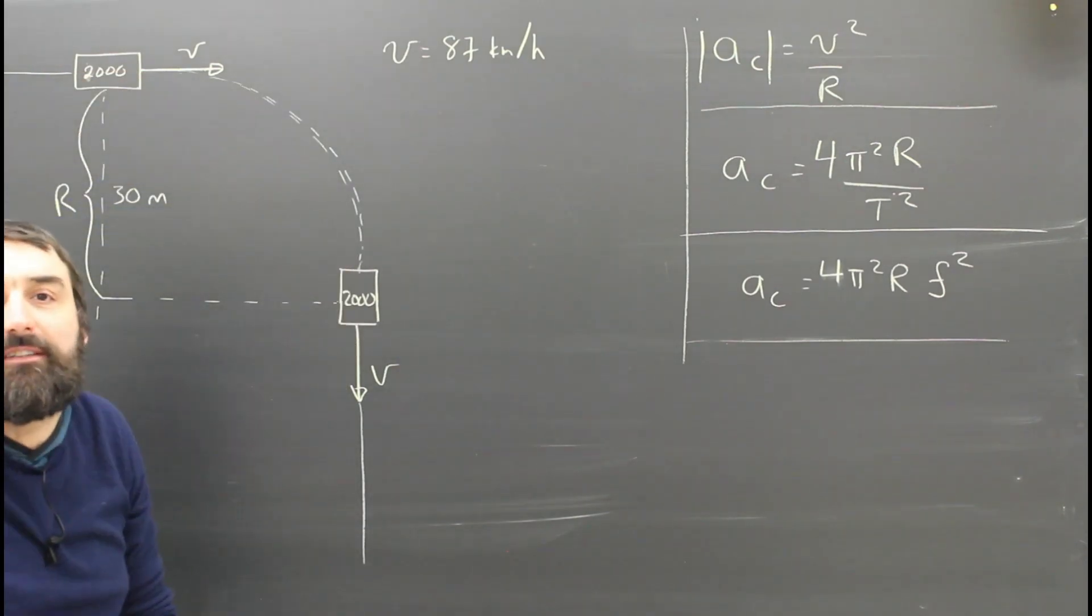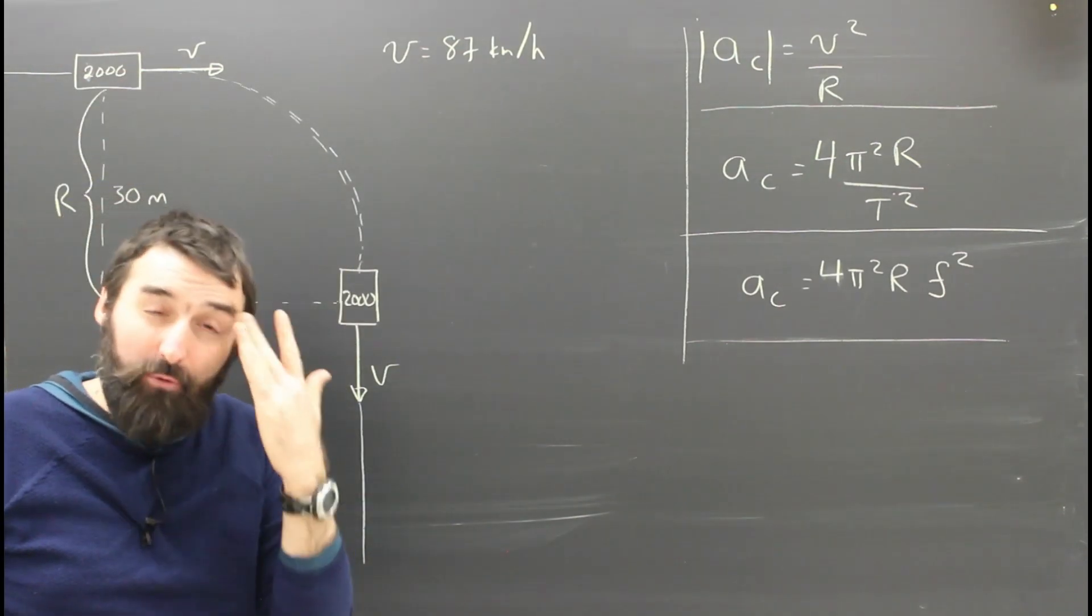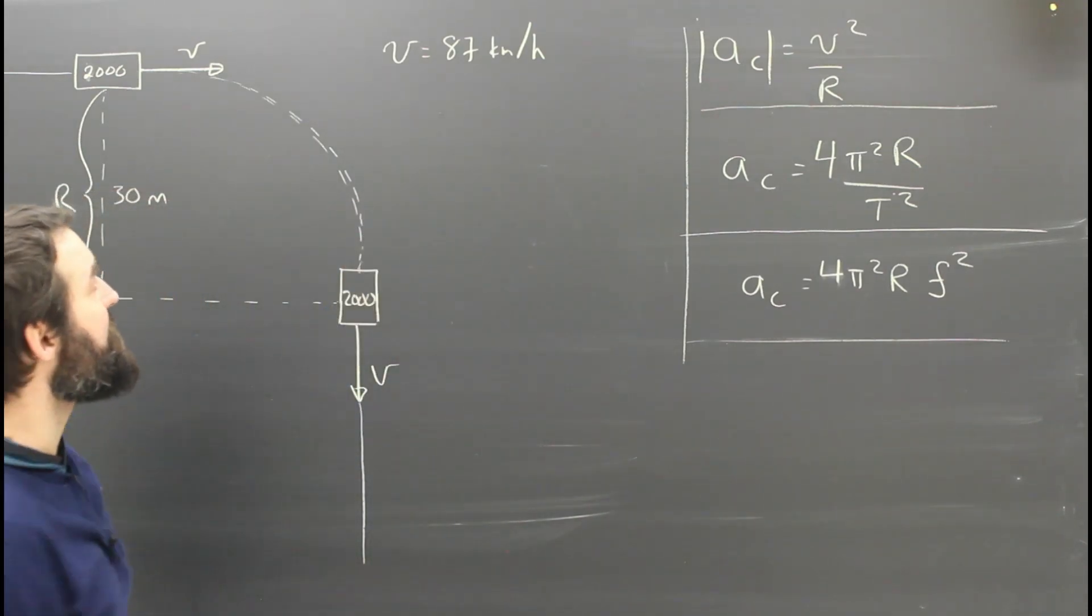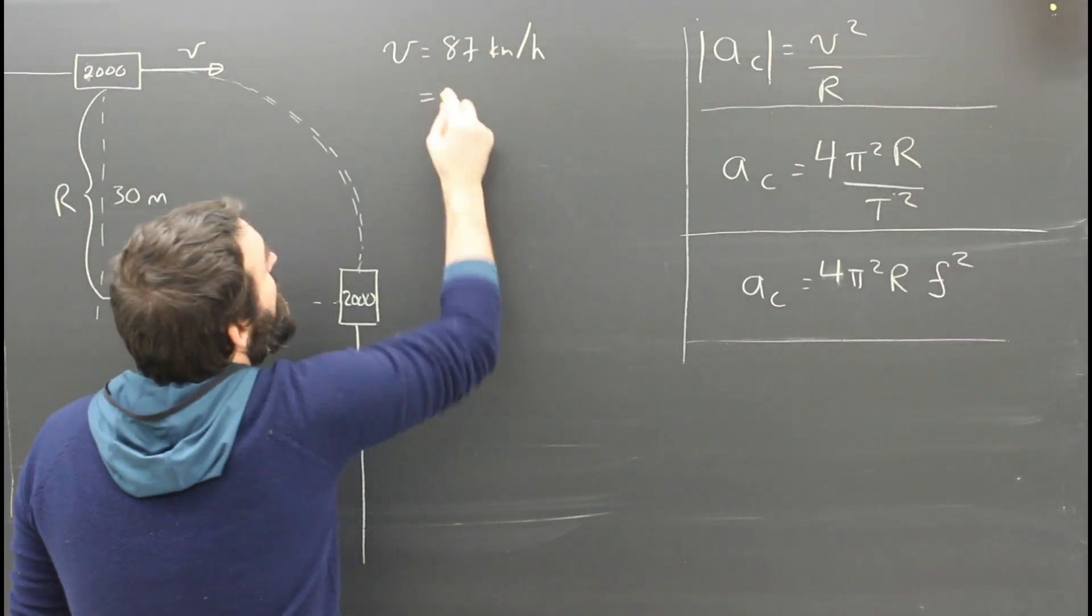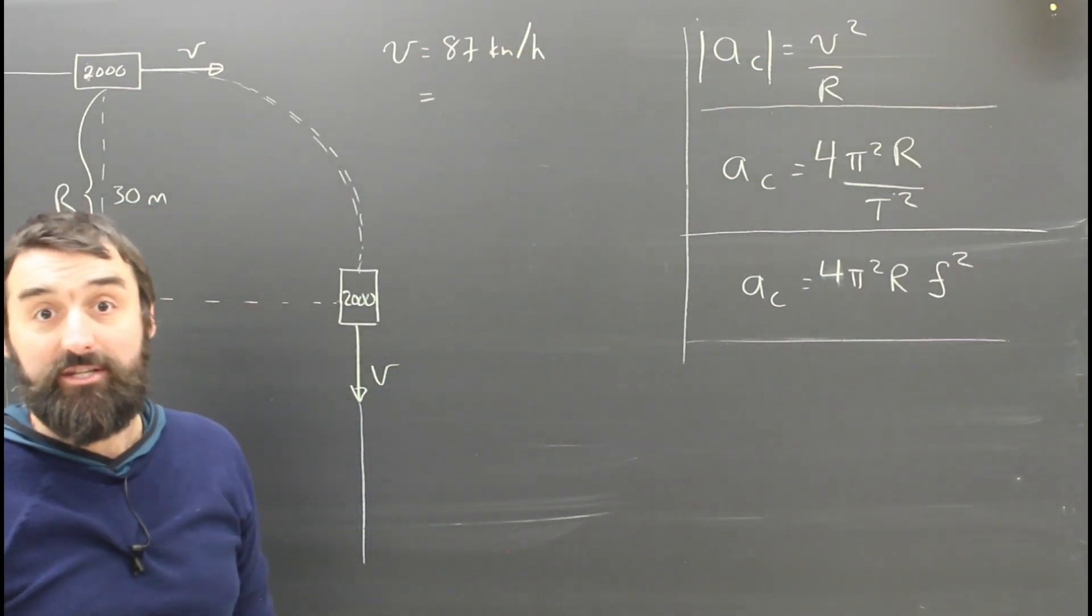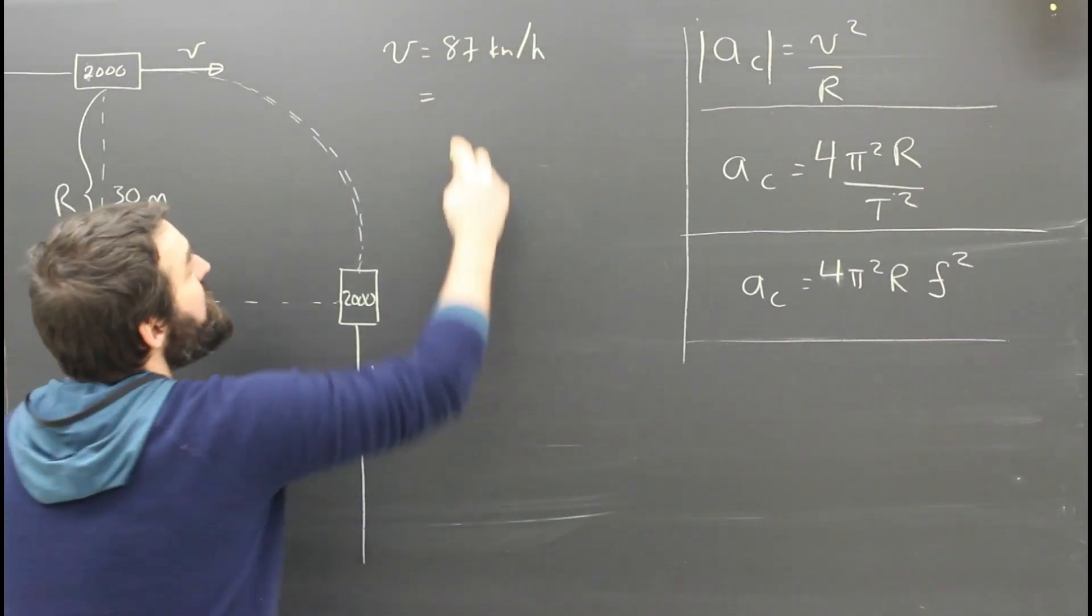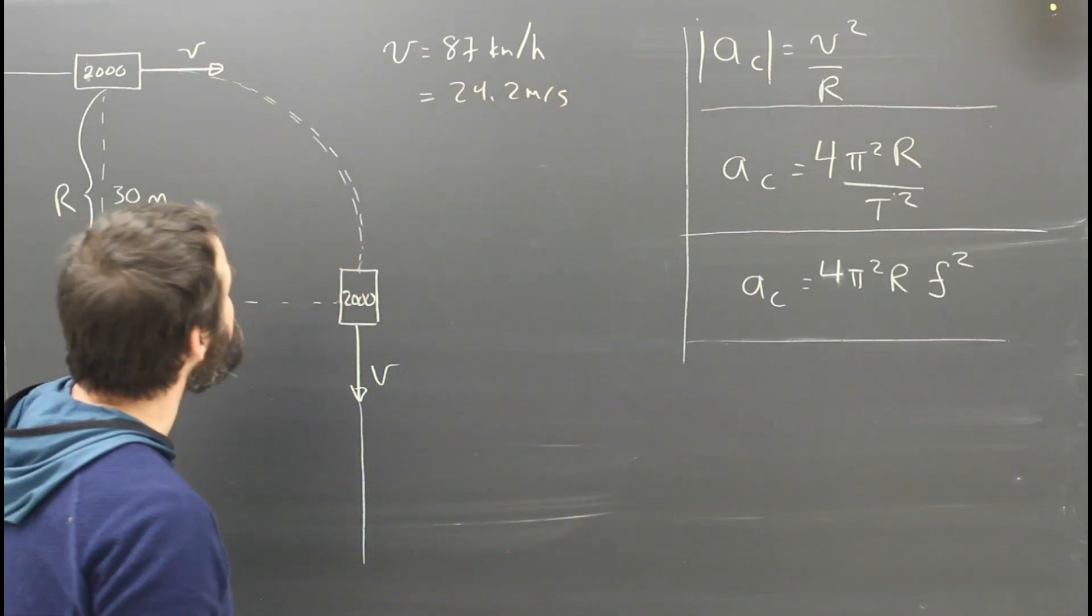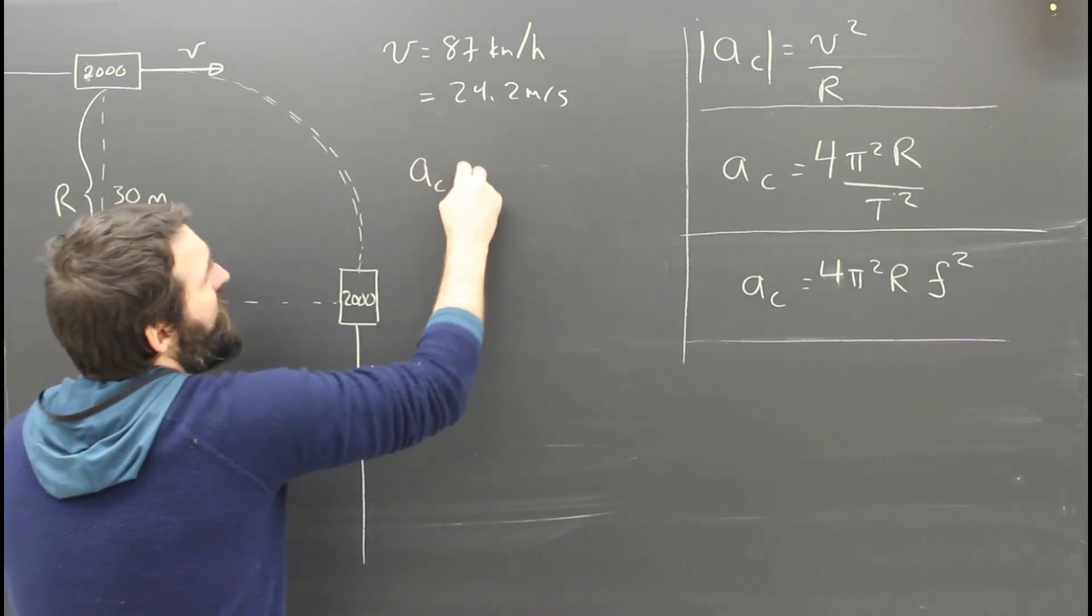So how much is this car accelerating? You can understand, I hope, that it is accelerating, but it's also kind of weird that we can calculate the number. So what is the acceleration? 87 kilometers per hour. Of course, we've got to change that into meters per second, which is about 24.2 meters per second. But leave it in your calculator, and then we'll dump it into the formula.